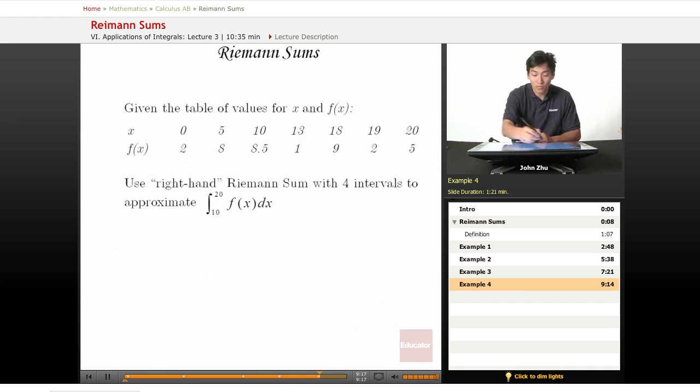Same setup, now we're using the right-hand rule, the right-hand Riemann sum with four intervals still, and still evaluated from 10 to 20, so we still only care about this region.